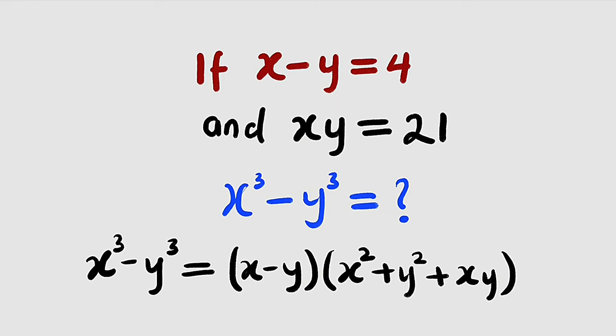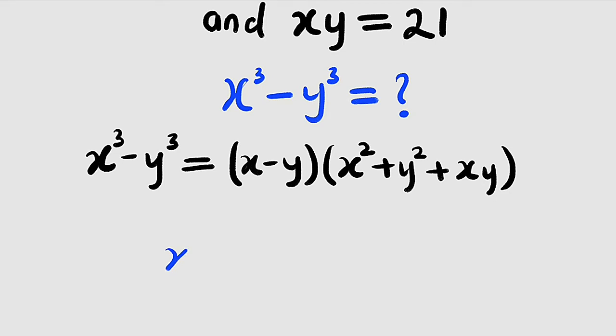So to obtain x squared plus y squared, we are going to square x minus y. So x minus y all squared, this is the same thing as x squared plus y squared minus 2xy.